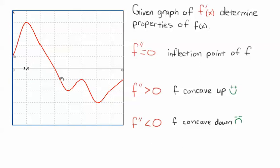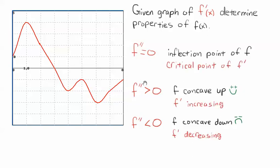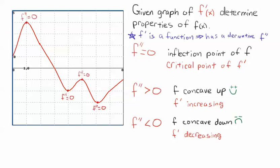Let's use the graph of f' of x. Remember, this red curve here is the graph of f'. So f' is also a function, and it has critical points — f' could be increasing and f' could be decreasing. Recall it's analogous to the relationship between f' and f. There's a relationship between f'' and f'. So if f'' is greater than 0, f' is increasing; and if f'' is less than 0, f' is decreasing. The bottom line is that f' is a function with a derivative f'', and it shares a lot of the properties that f has in relation to f'.